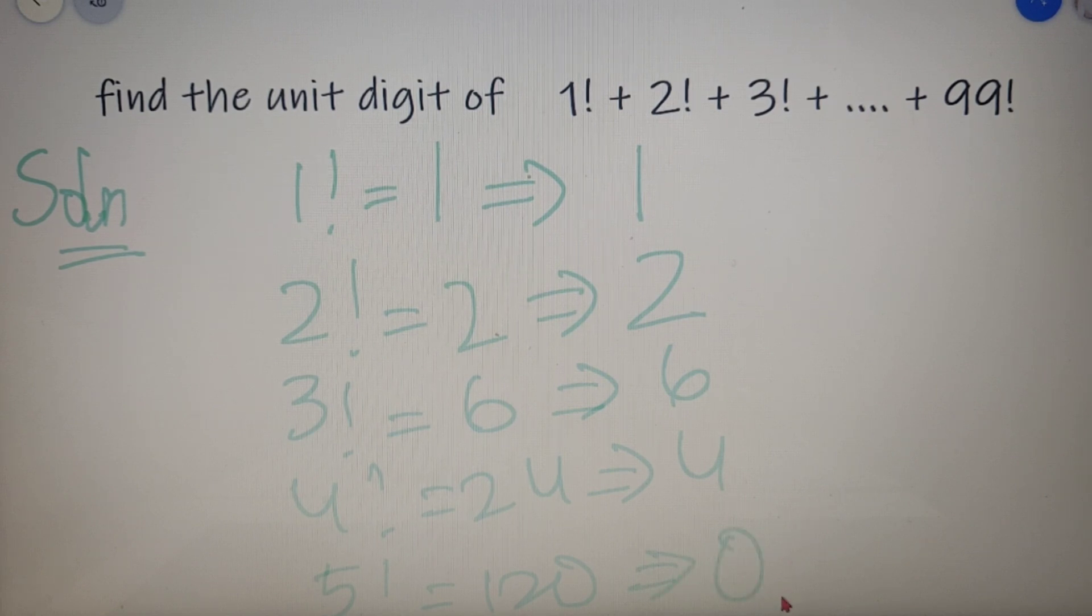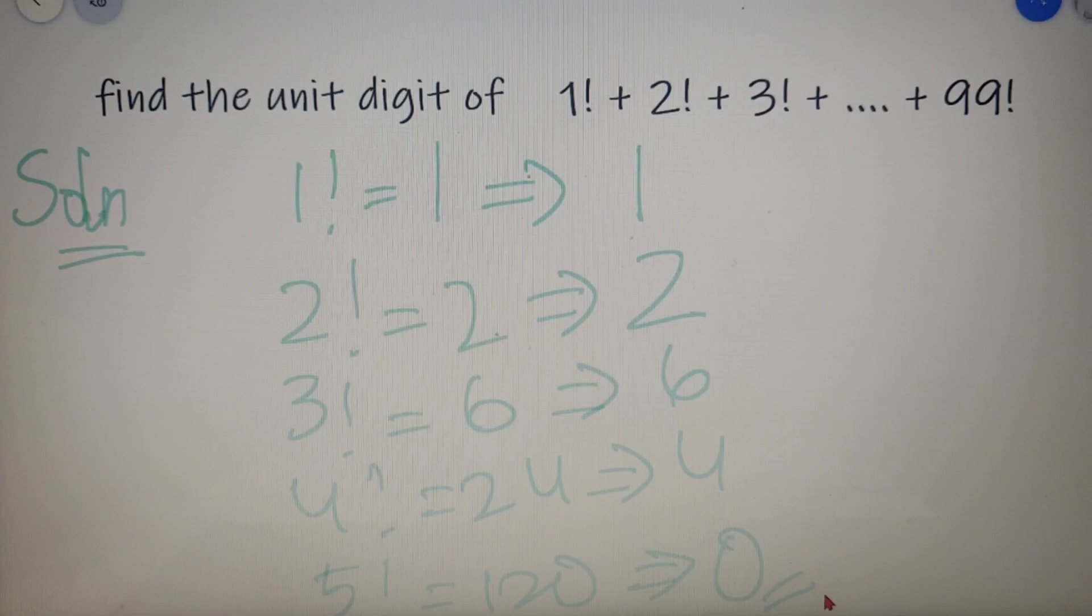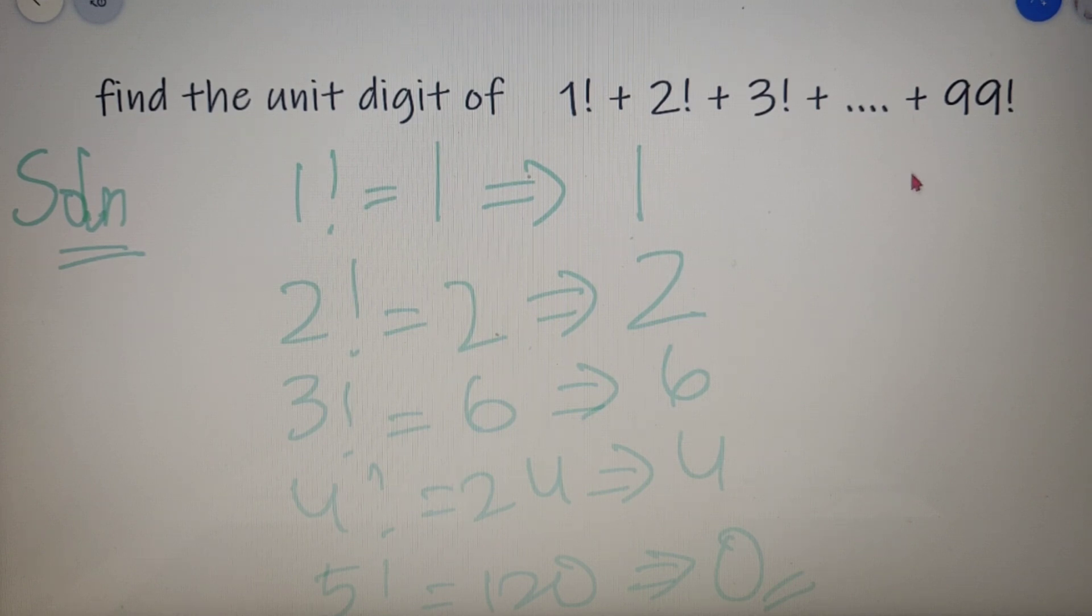Now you can clearly see that we have got the unit digit of 5 factorial as 0. And since we have got the unit digit of 5 factorial as 0, then all the unit digits of all the factorials greater than 5 will have the unit digit as 0.